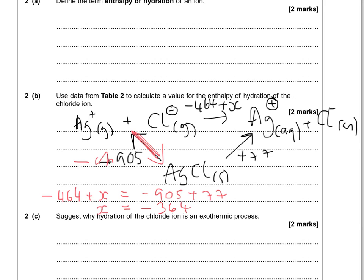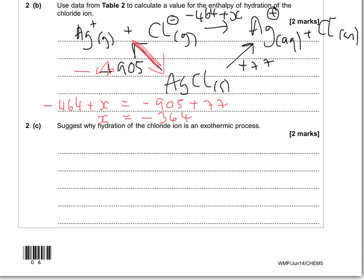That was quite a tricky Hess cycle, but hopefully you can see the theory behind how it works. So: why is the hydration of the chloride ion an exothermic process? Whenever they ask whether something is exothermic you've got to talk about where the attraction or repulsion is. The first mark is for saying there's an attraction between the chloride ion and the water. Then say why — because the water is polar, or the water has dipoles. There's an attraction between the chloride ion and water because the water is polar. Those are your two marks.